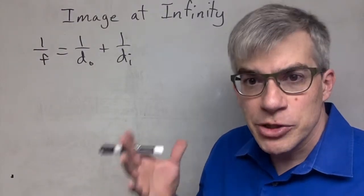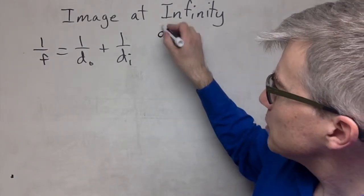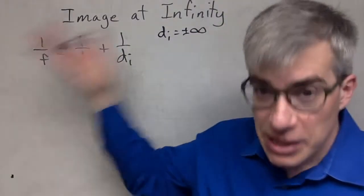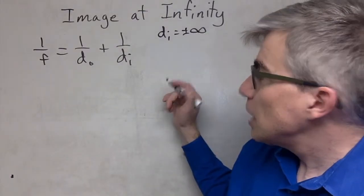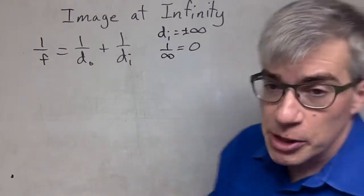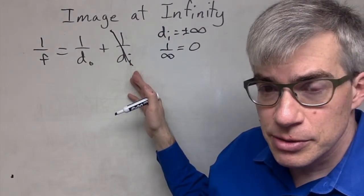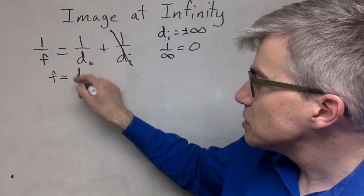What's an image at infinity, and how would you get one? If the image is at infinity, we want Di to be either plus or minus infinity, infinitely beyond the lens or infinitely before the lens. Either way, one over infinity we can essentially treat as being zero. So this term is effectively gone in the lens or mirror equation. We're left with the focal length equals DO.